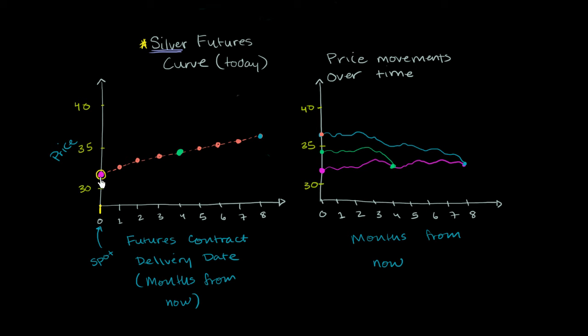So if you were to go out and buy silver today, it would cost you roughly $32. Let me say that this is per ounce. It would cost you $32 per ounce.